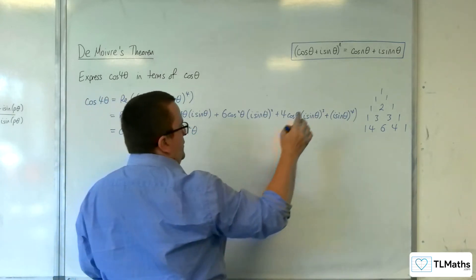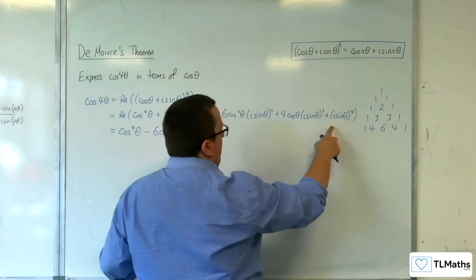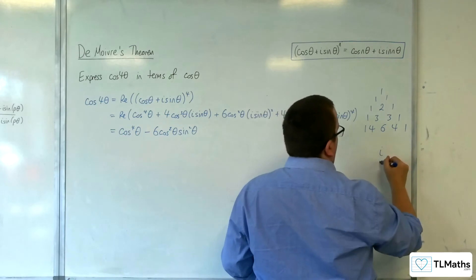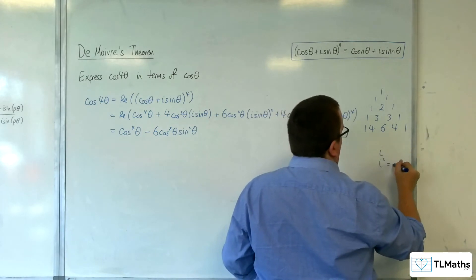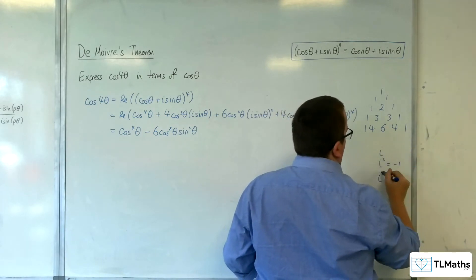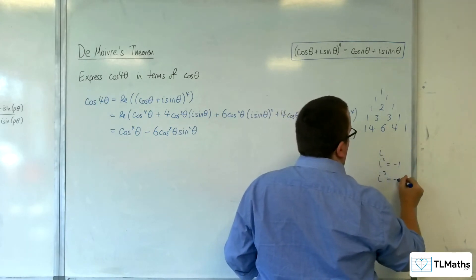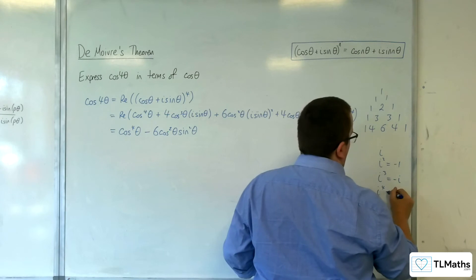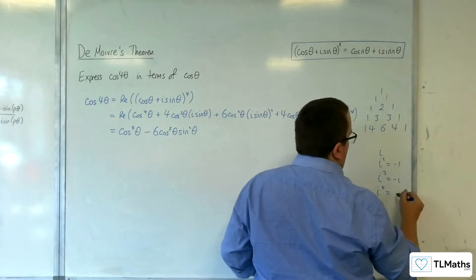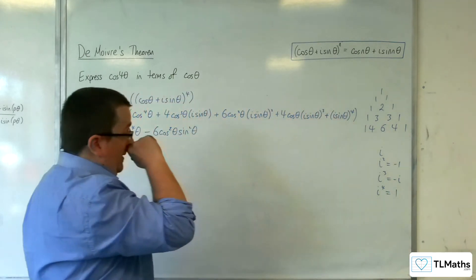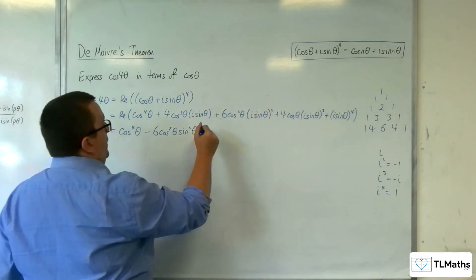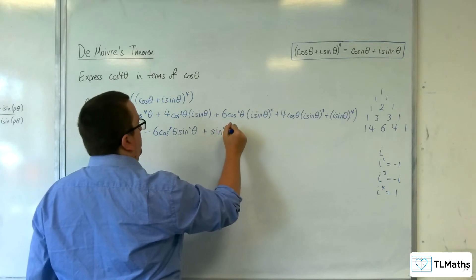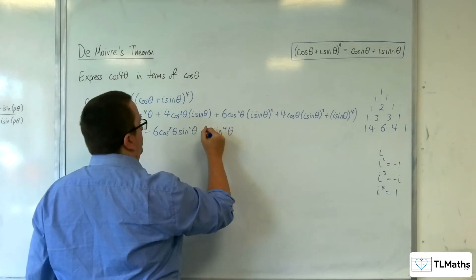And this term here: i squared is minus 1, i cubed is minus i, i to the 4 is just going to be back to 1. So that's plus sine to the 4 theta.